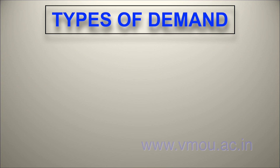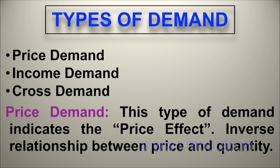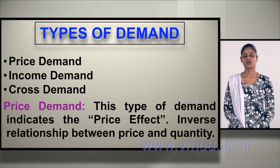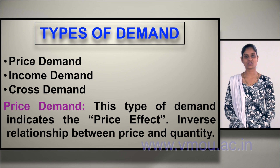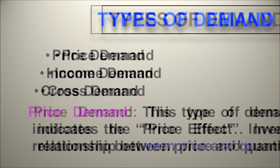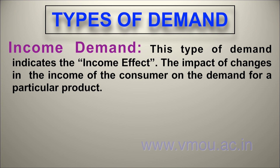Types of demand are basically divided into three parts: price demand, income demand, and cross demand. Price demand indicates the price effect. As per the law of demand, if price increases due to some reasons, the consumer will consume a lower quantity compared to before.